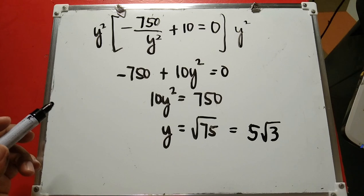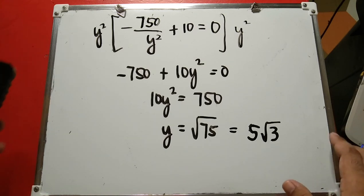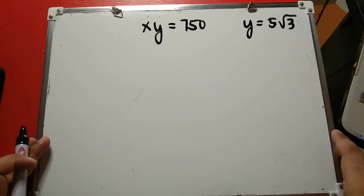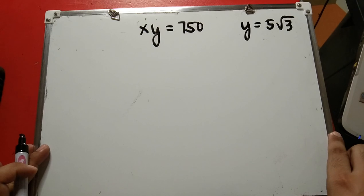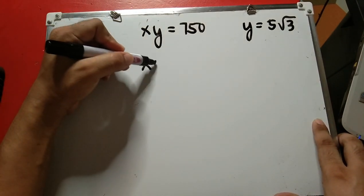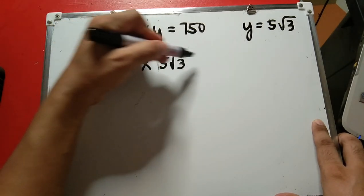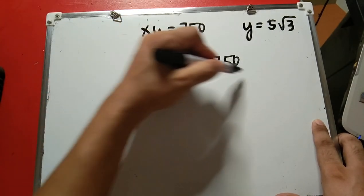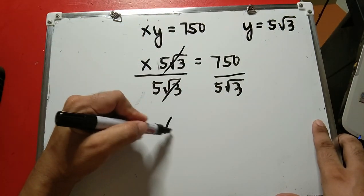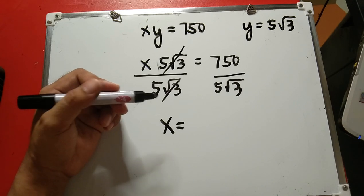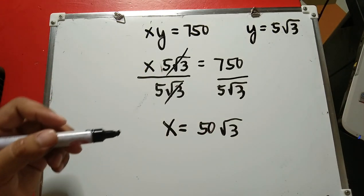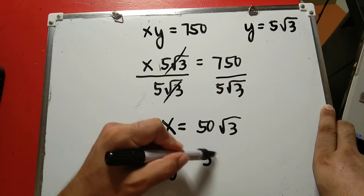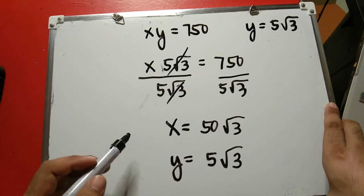Now plug y equals 5 root 3 back into the first equation: x times 5 root 3 equals 750. Divide both sides by 5 root 3 to get x equals 750 divided by 5 root 3, which equals 50 root 3. So the final answer is x equals 50 root 3 and y equals 5 root 3. These are the two positive numbers.